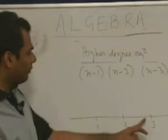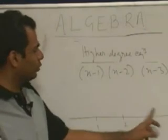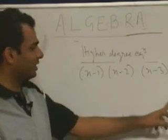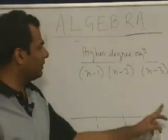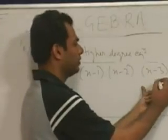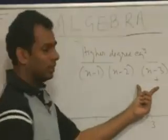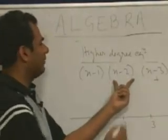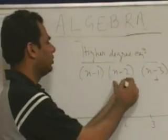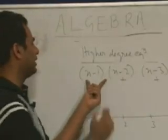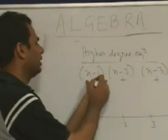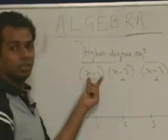Now, if you look at it — if you take any value greater than 3, all three factors (x-1), (x-2), and (x-3) will each be positive.